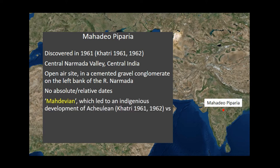Kathri, who did the initial work, classified it as a Mahadevian industry and called it a pebble tool and flake complex, equatable to Mode 1 terminology. In this time period you have multiple terminologies: the European lower, middle and upper Paleolithic; the African early, middle and late Stone Age; indigenous series 1 and series 2; and cultural nomenclatures like Mahadevian for the lower Paleolithic or Nevasian for the middle Paleolithic. There is no standardization in terminology, something currently being addressed in the subcontinent.